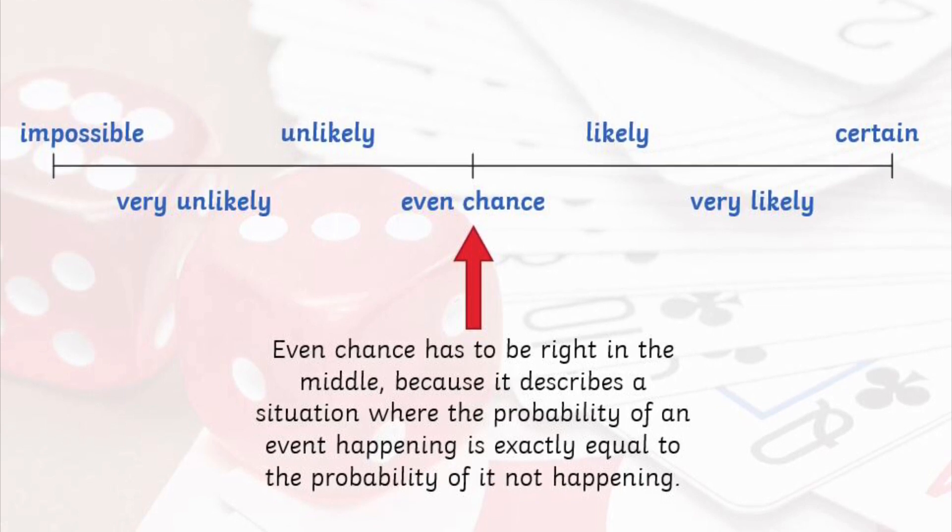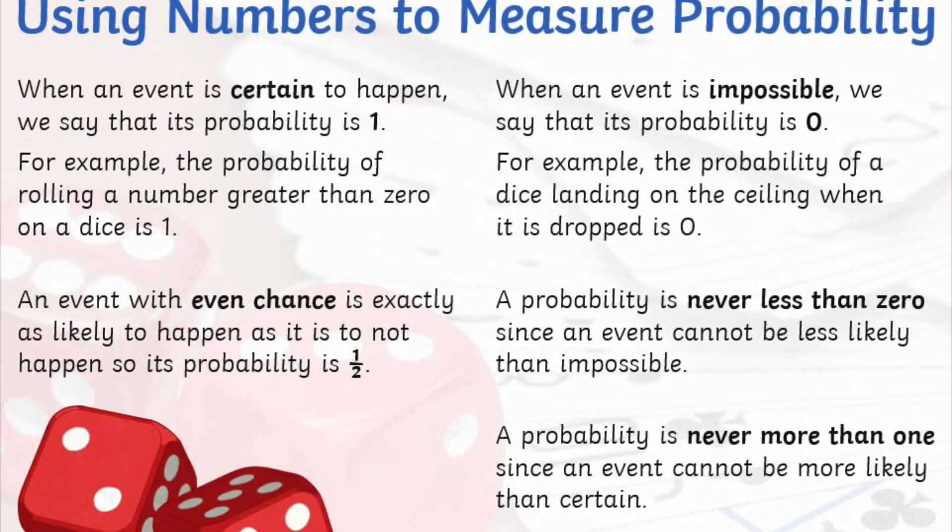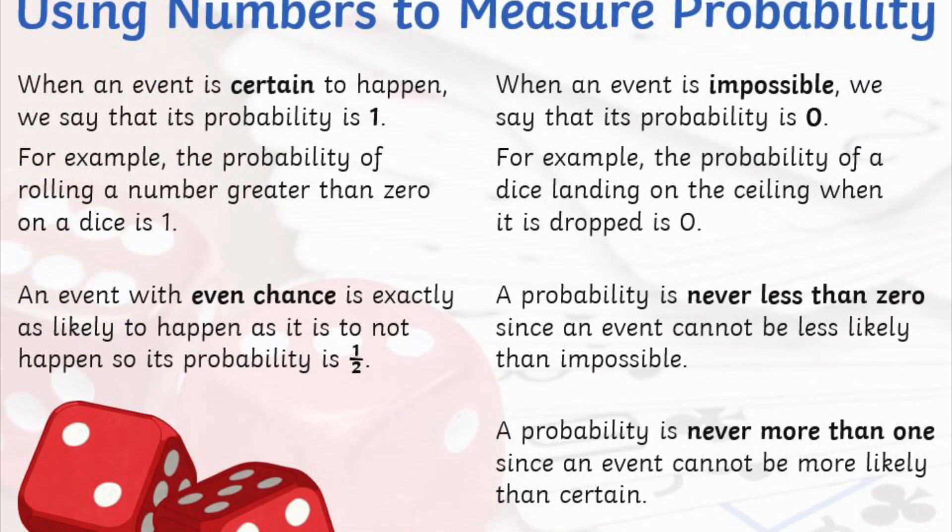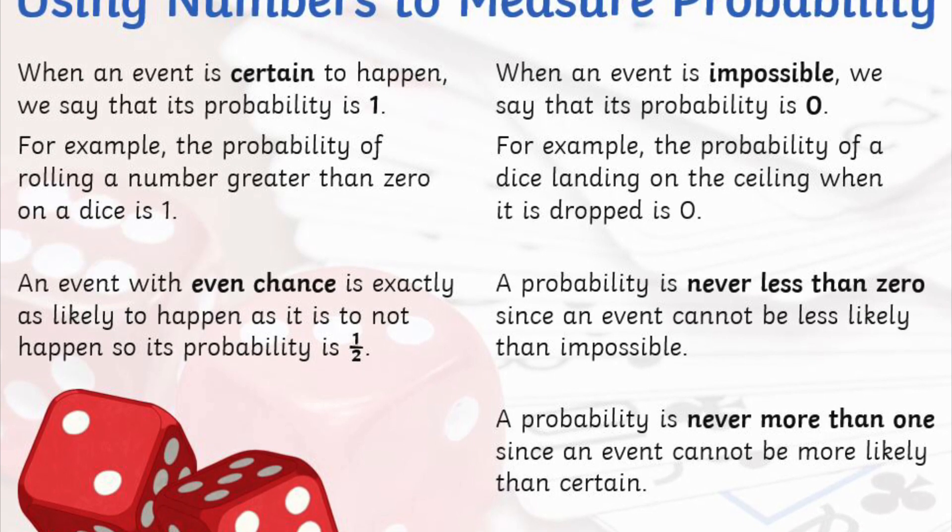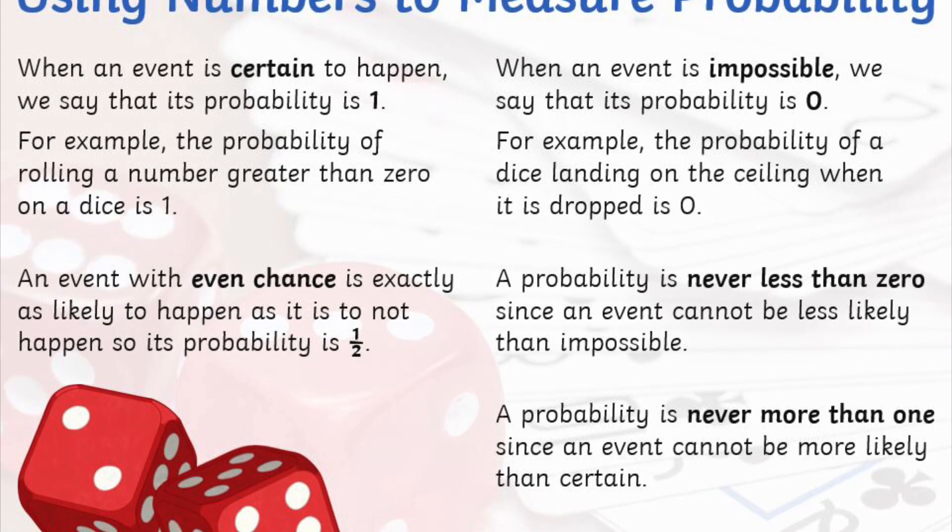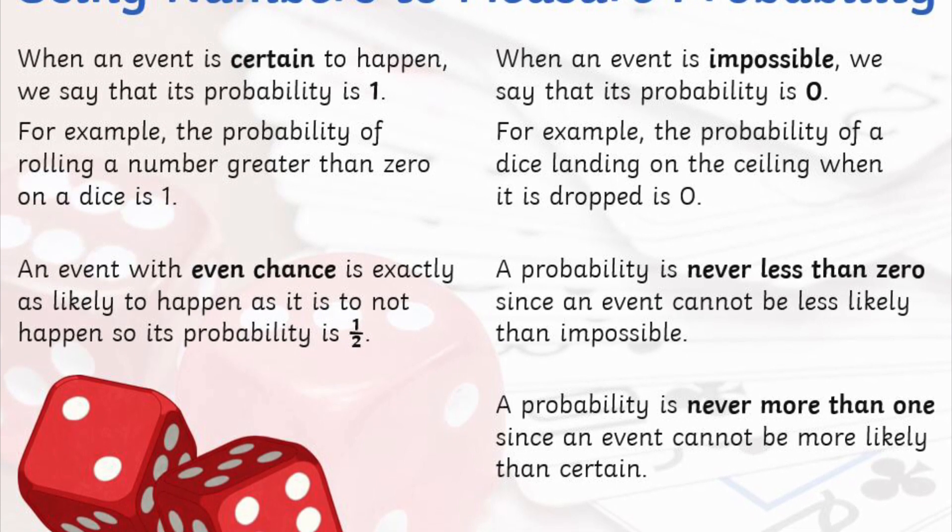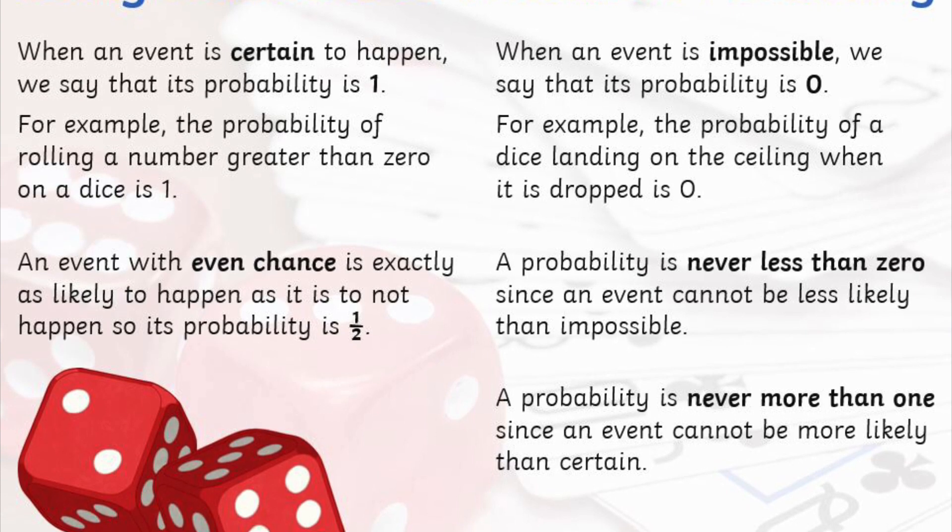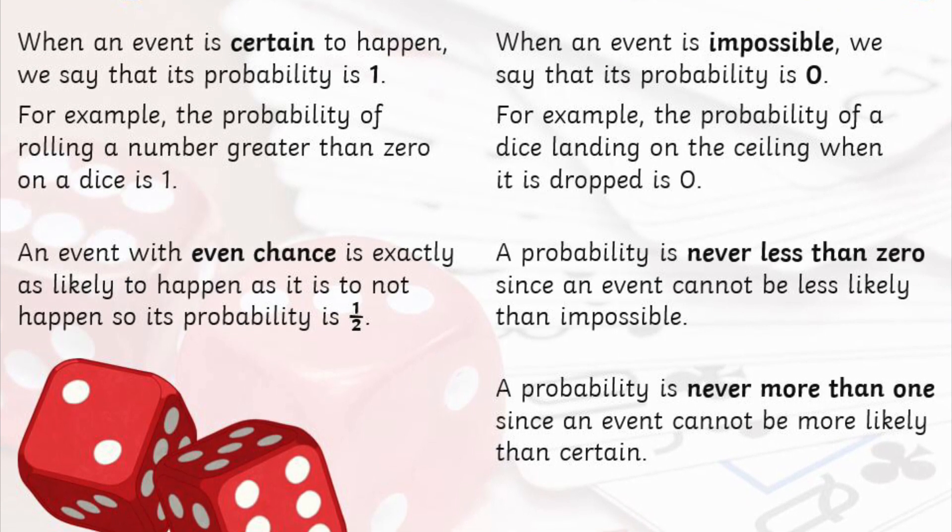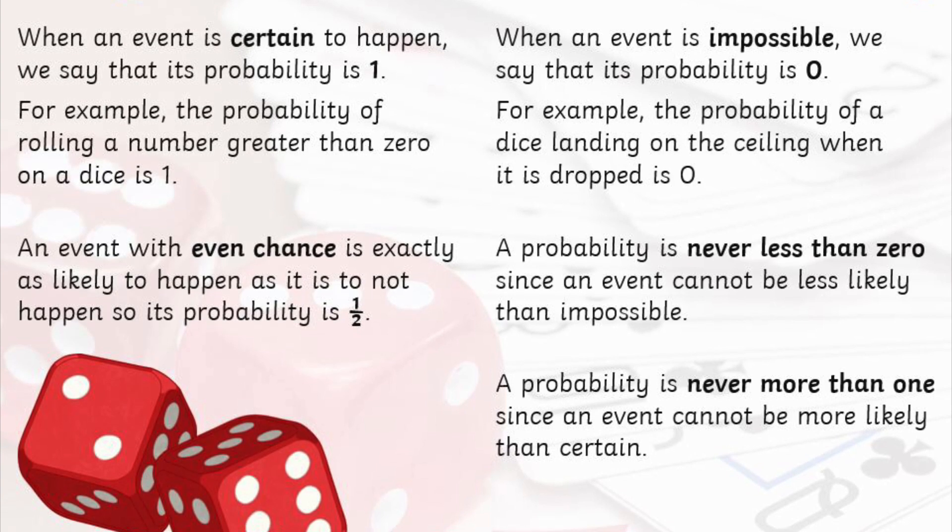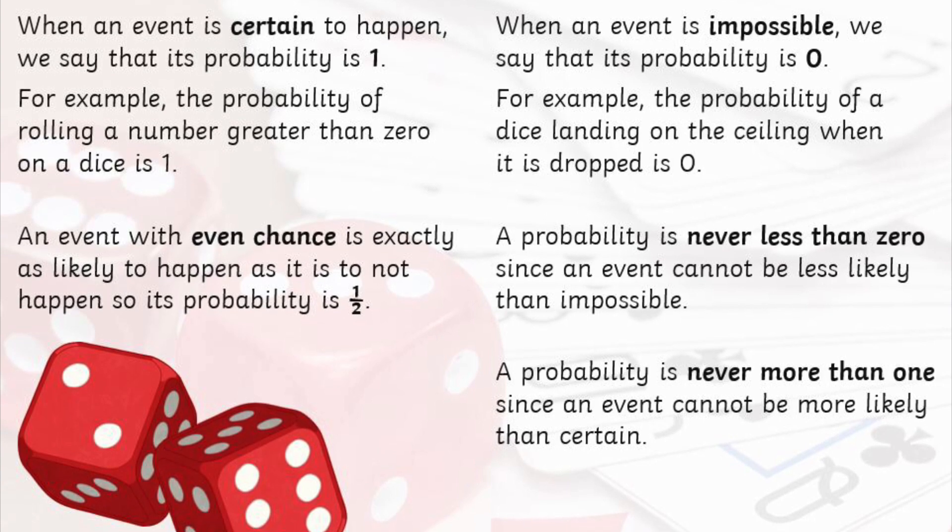As well as using the language on probability scales to measure the probability of something happening, we can also use numbers, fractions, and decimals. So when an event is certain to happen, 100%, we say that it has a probability of 1. When it is impossible, definitely not going to happen, we say 0. You cannot have a probability less than 0 and you cannot have a probability more than 1. These are the lower and upper limits.